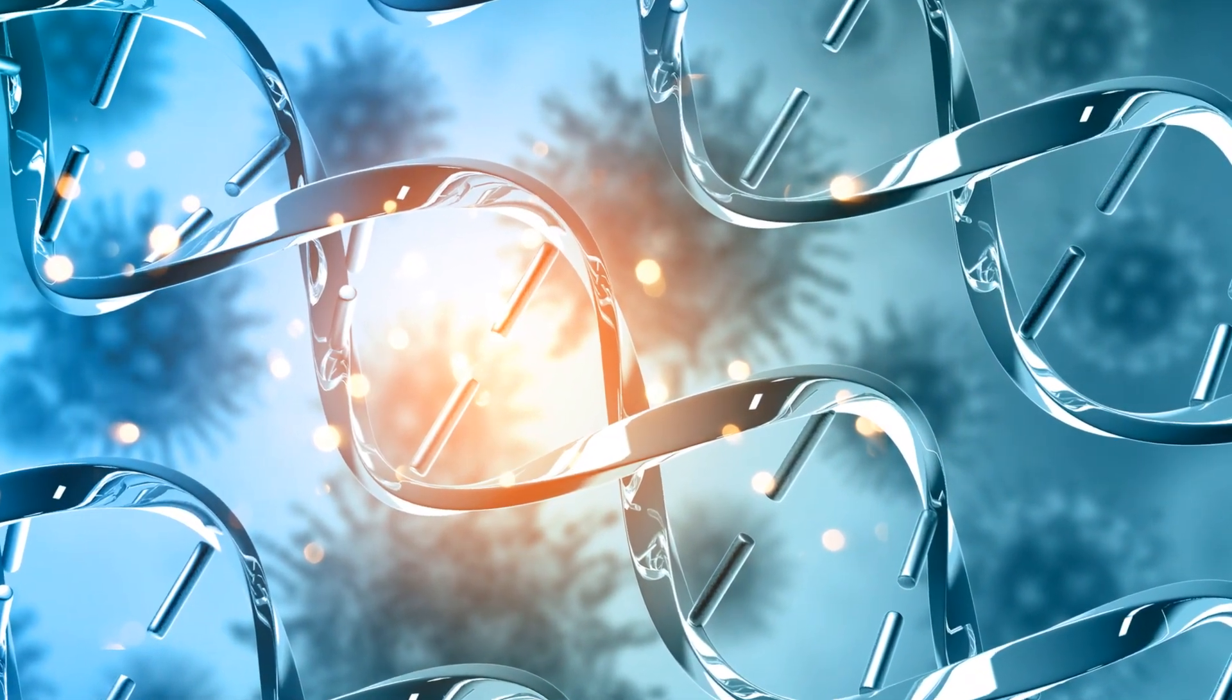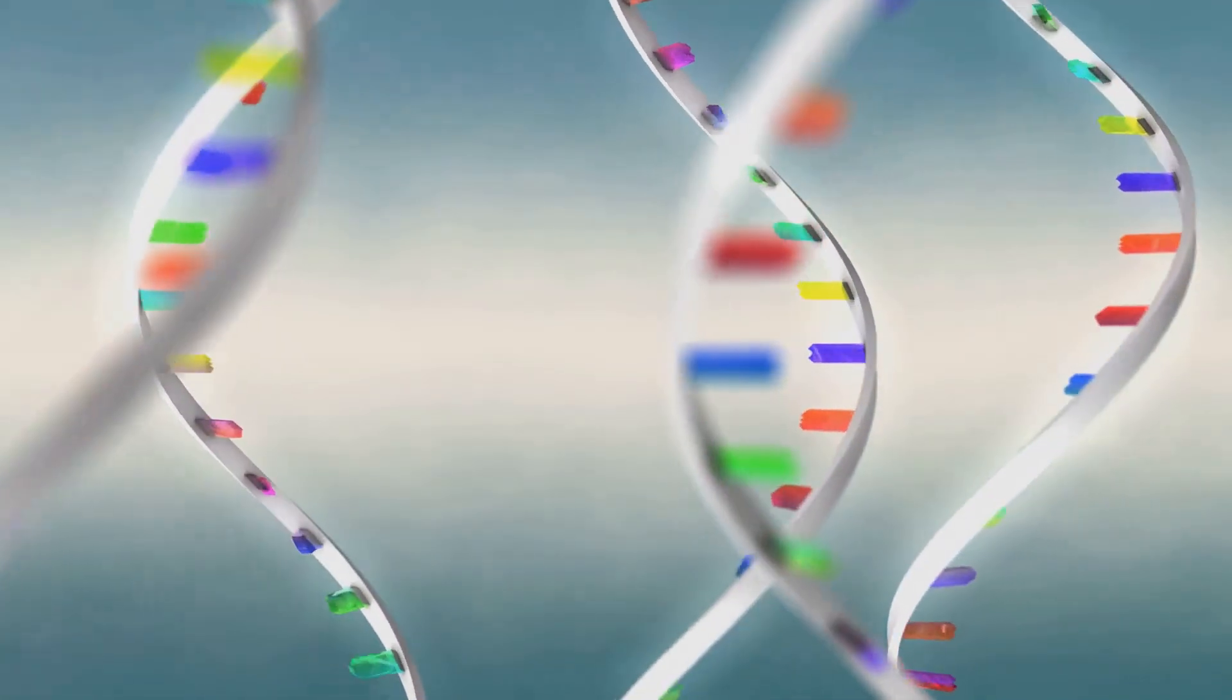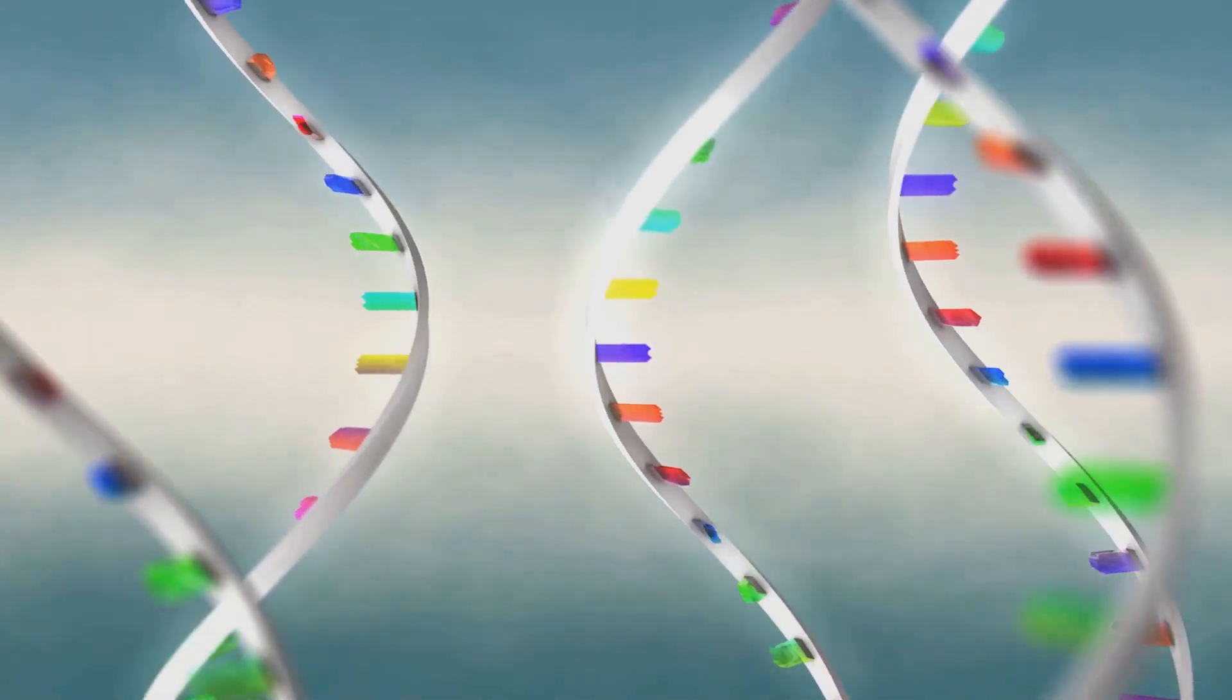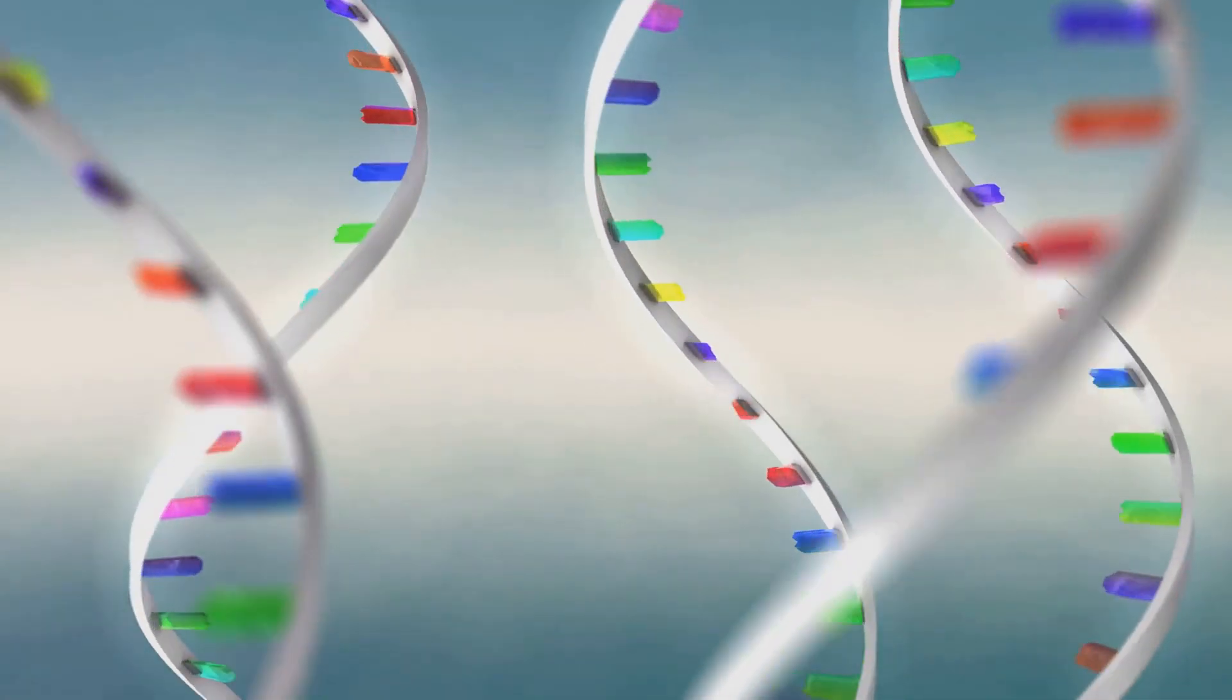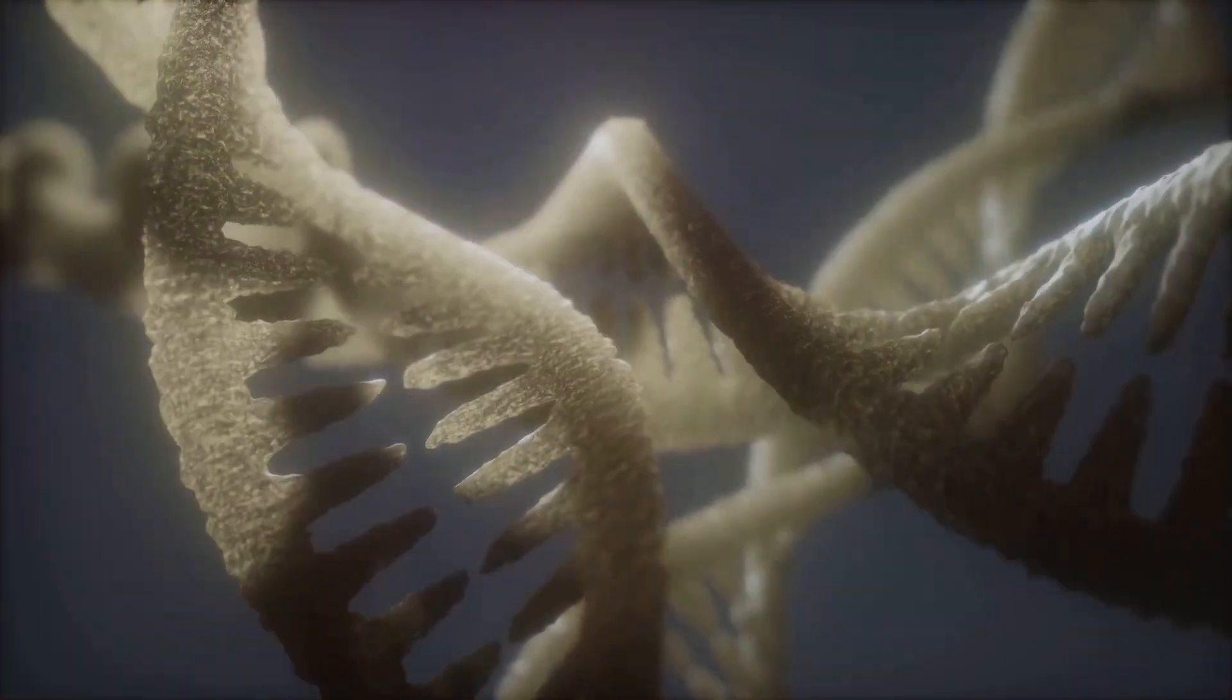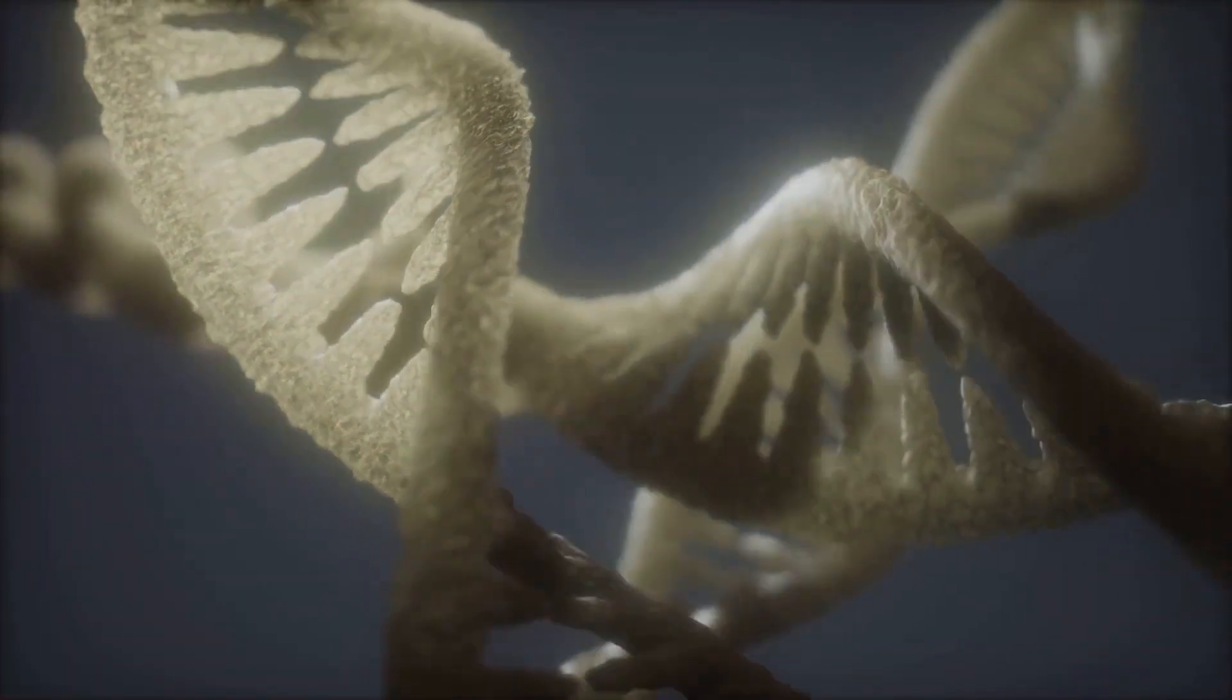First up, transcription. It's like a copier machine. DNA hands over its instructions to messenger RNA or mRNA, which is like a temporary photocopy of the original blueprint. This process happens in the nucleus, where DNA is too important to leave. Gotta keep those original plans safe.